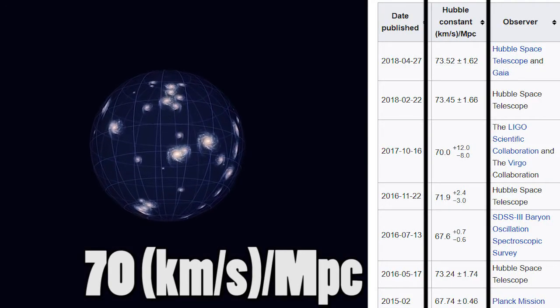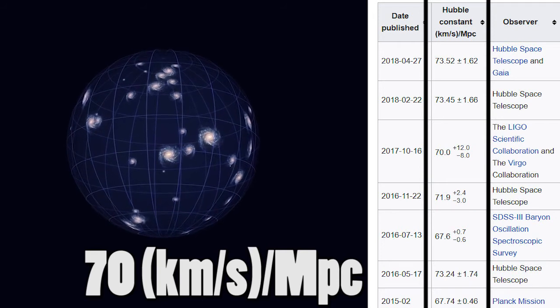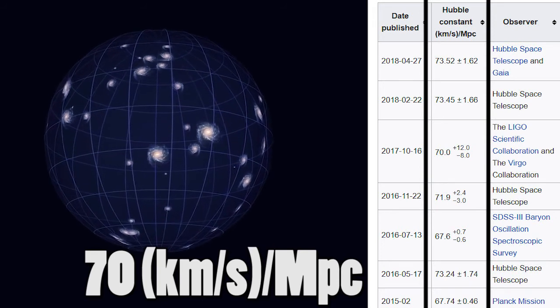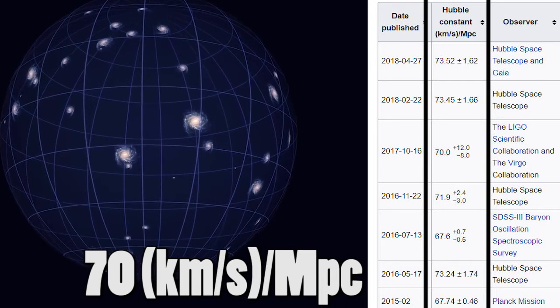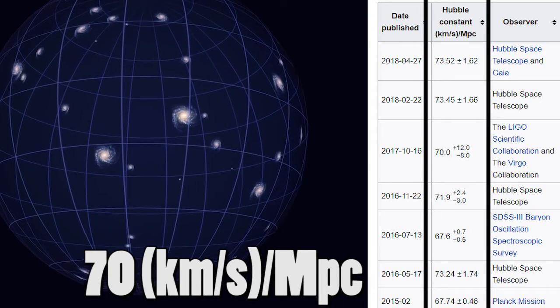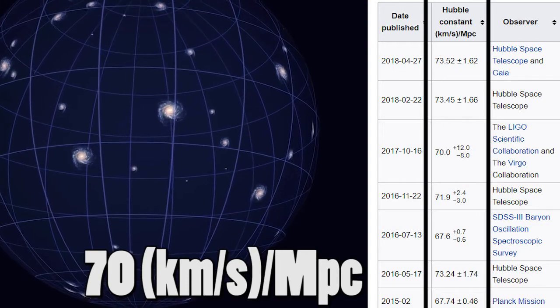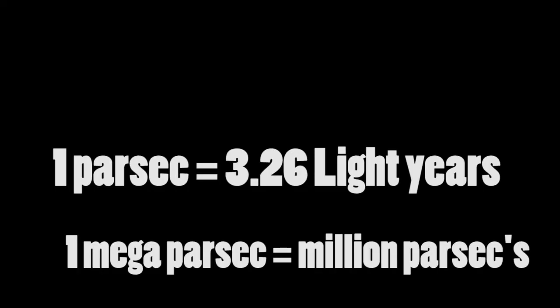We talked about the expansion rate of our universe, which Edwin Hubble tried to measure. We now call it Hubble's constant, and its value is 70 kilometers per second per megaparsec. So what is a megaparsec? A parsec is the distance equal to 3.26 light years, and a megaparsec is a million parsecs.